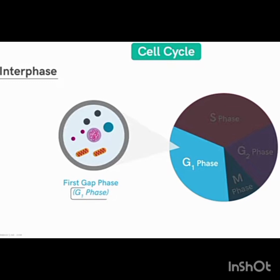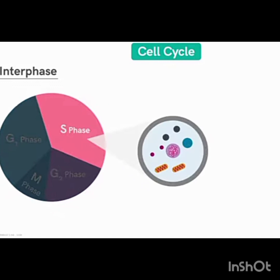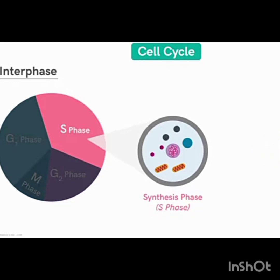Except DNA, which is in the nucleus, that will not get doubled. Centrioles will also not get doubled. Next is the S phase, also called the synthesis phase — synthesis means something is being produced. What is produced here? DNA duplication — DNA replication takes place here.